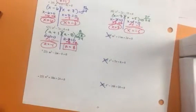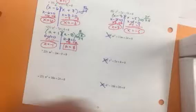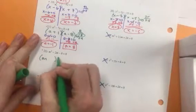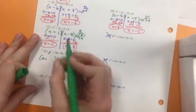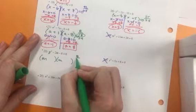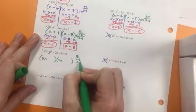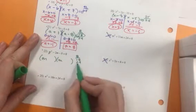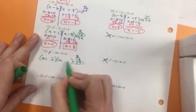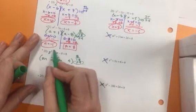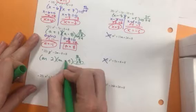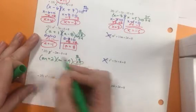Problem 22. We factor it. M is in front. Multiples of 8 are 1 and 8, 2 and 4. But I need a 2. 2 and 4 can give me a 2. And because it is a negative, I need the biggest number to be a negative. And the smaller to be positive.